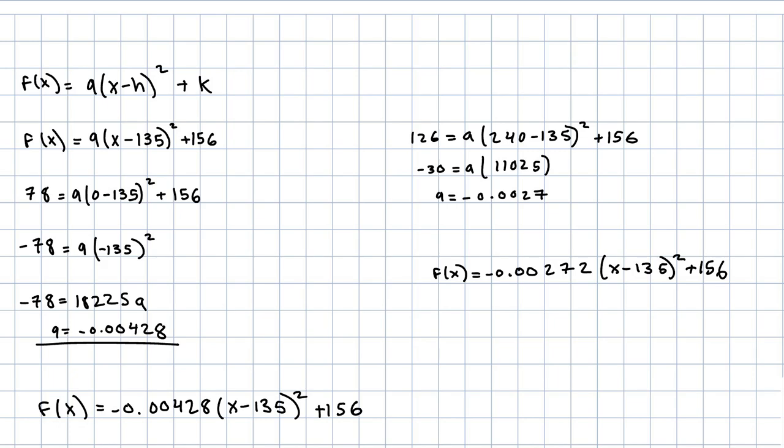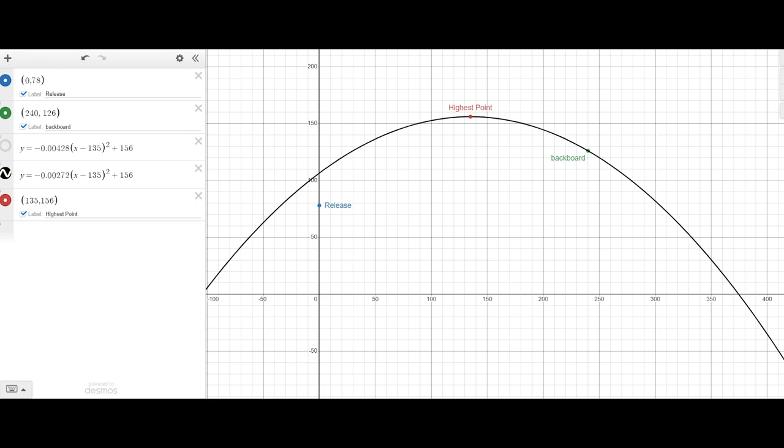For the backboard equation, we got negative 0.00272 times (x minus 135) squared plus 156. We see that it pretty closely tracks the highest point and backboard as gravity would.